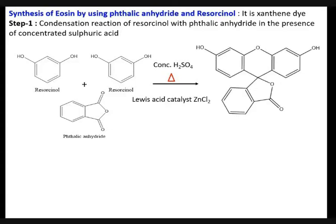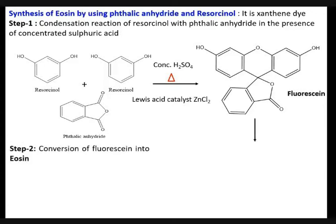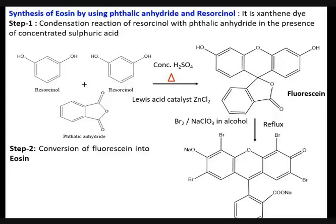It will form the spiro compound, that is fluorescein. The second step is fluorescein converted into eosin, that is the bromination under reflux conditions in acidic media, which will open the ring. Acidic condition is also applicable here. Basic condition is also possible. This is all about our resorcinol synthesis.